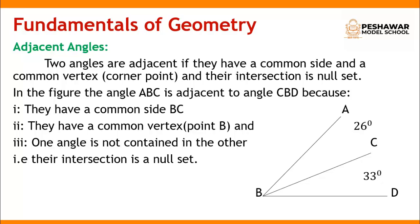Why are these two angles adjacent? Because they have a common side, which is BC, and they have a common vertex, which is point B. One angle is not contained in the other, meaning they do not overlap — their intersection is a null set.